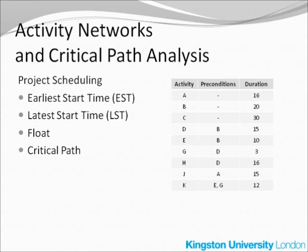As for activity D or activity E, both of them have to wait until activity B is completed — only then you can go ahead with D and E. Similarly, for example, activity G has to wait until activity D is completed. If you look at the bottom of this table, activity K has two preconditions. It means that you have to wait until both activities E and G are completed before you go ahead with activity K.